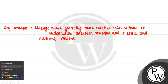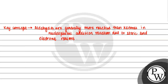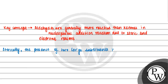Now, if we want to talk about the steric and electronic reasons — sterically, the presence of two large substituents in ketones hinders the approach of the nucleophile. If you don't know, a nucleophile is a kind of electron-rich substance.